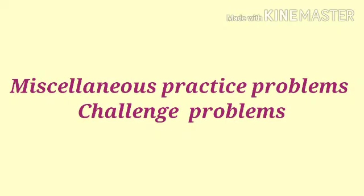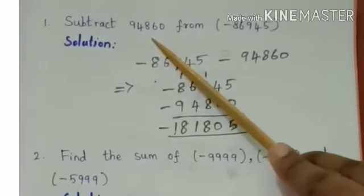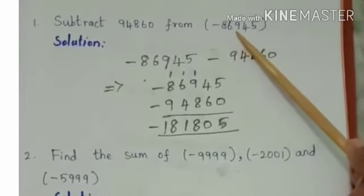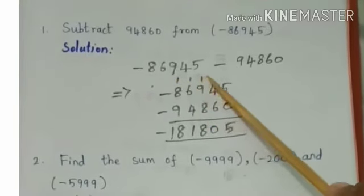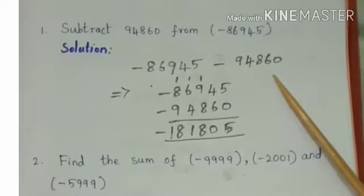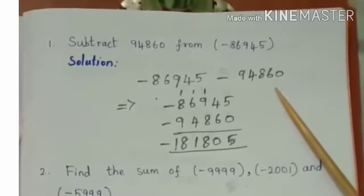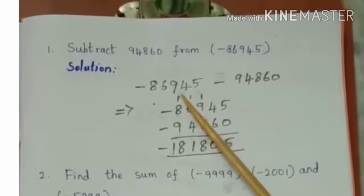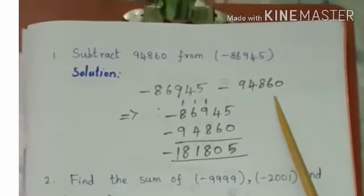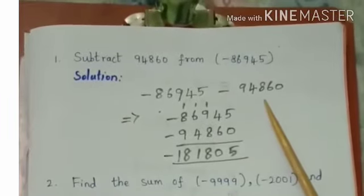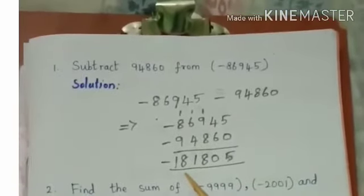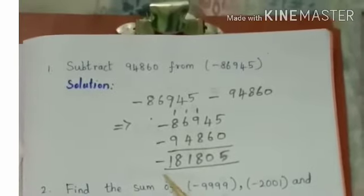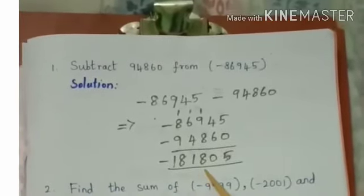Miscellaneous problems: subtract 94,860 from minus 86,945. The problem is written as minus 86,945 minus 94,860, which becomes an addition of integers with the same sign, giving minus 181,805.